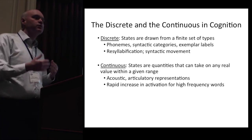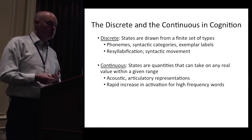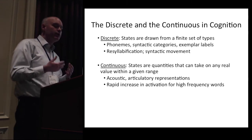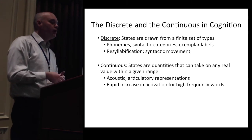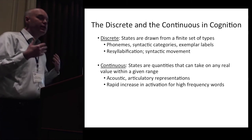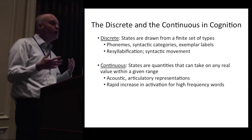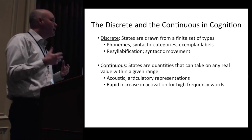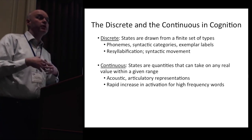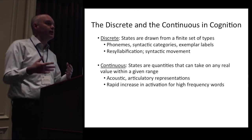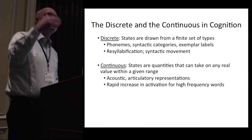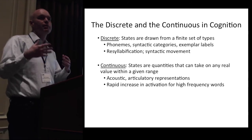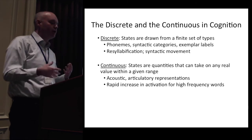We can contrast this with continuous representations and processes, the states of which can take on any real value within a given range. In terms of representations, these could be things like acoustic or articulatory structure. In terms of processes, we can think about a psycholinguistic model of lexical access — there might be a rapid increase in the continuous value of activation for high frequency words, which enables you to retrieve them more quickly and more accurately.